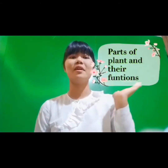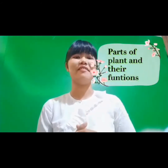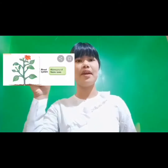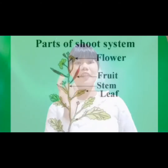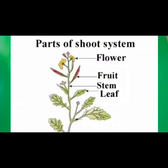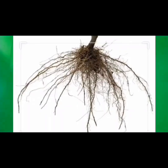So let's observe about plants together. Today we are going to learn about parts of plants and their functions. Plants have two organ systems: they are the shoot system and the root system. The shoot system consists of flower, leaf, stem, and fruit. The root system consists of the root.